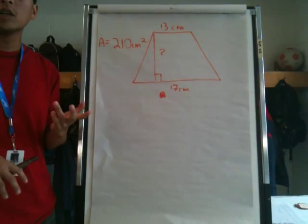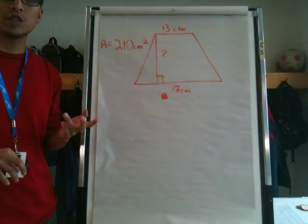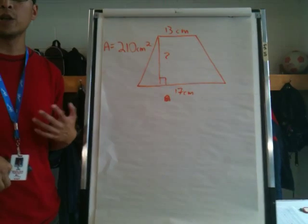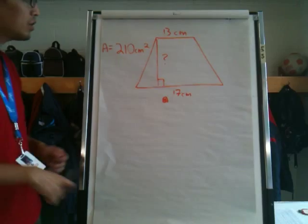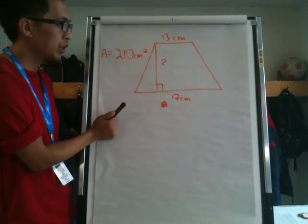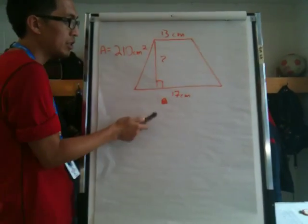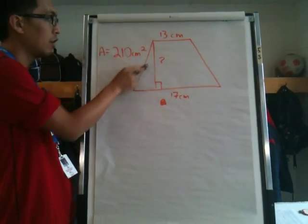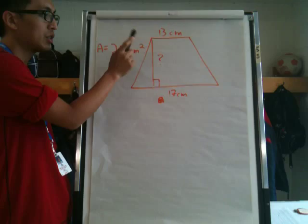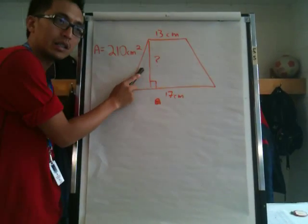I just want to show you again a couple of situations where you would be finding the unknown in the dimensions of a trapezoid. So here we have the first trapezoid and we know one side is 13 centimeters, another side is 17 centimeters, and we've also been told the area which is 210 centimeters squared. The thing that we don't know here is the height.